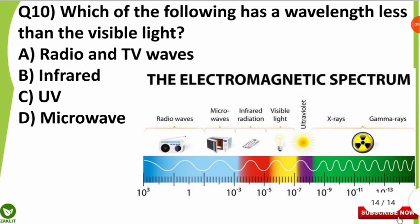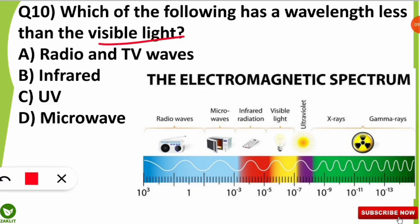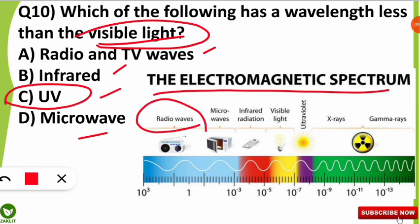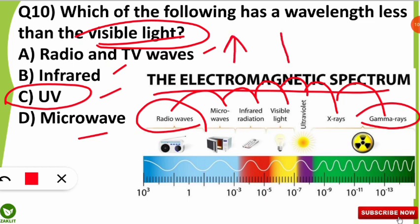The final question was: which of the following has a wavelength less than visible light? The options were radio and TV waves, infrared, UV, and microwave. The correct option is option C — UV rays have a shorter wavelength than visible light. The electromagnetic spectrum in decreasing wavelength order is: radio waves, microwave, infrared, visible light, ultraviolet, X-ray, and gamma rays — representing decreasing wavelength and increasing frequency.